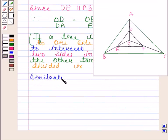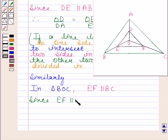Similarly, in triangle BOC, EF is parallel to BC. Since EF is parallel to BC, therefore OE by EB is equal to OF by FC by the same theorem that is Basic Proportionality Theorem.